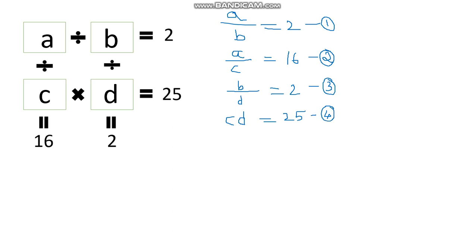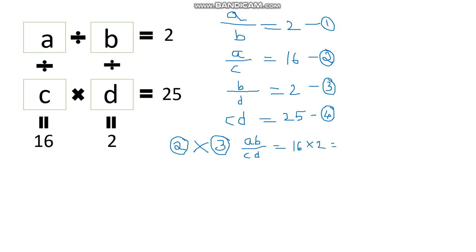Now from these four equations, I will multiply equation number 2 and equation number 3 together. Multiplying equations 2 and 3 gives us: (a/c) × (b/d), which equals a·b divided by c·d, and that equals 16 × 2, which is 32.